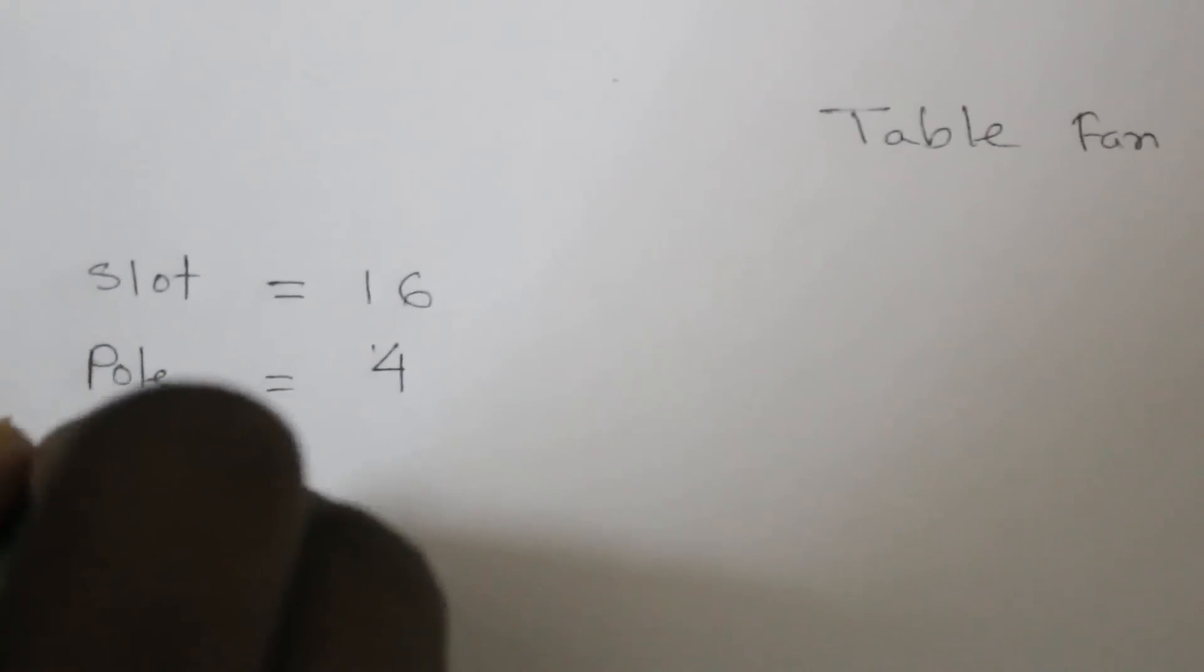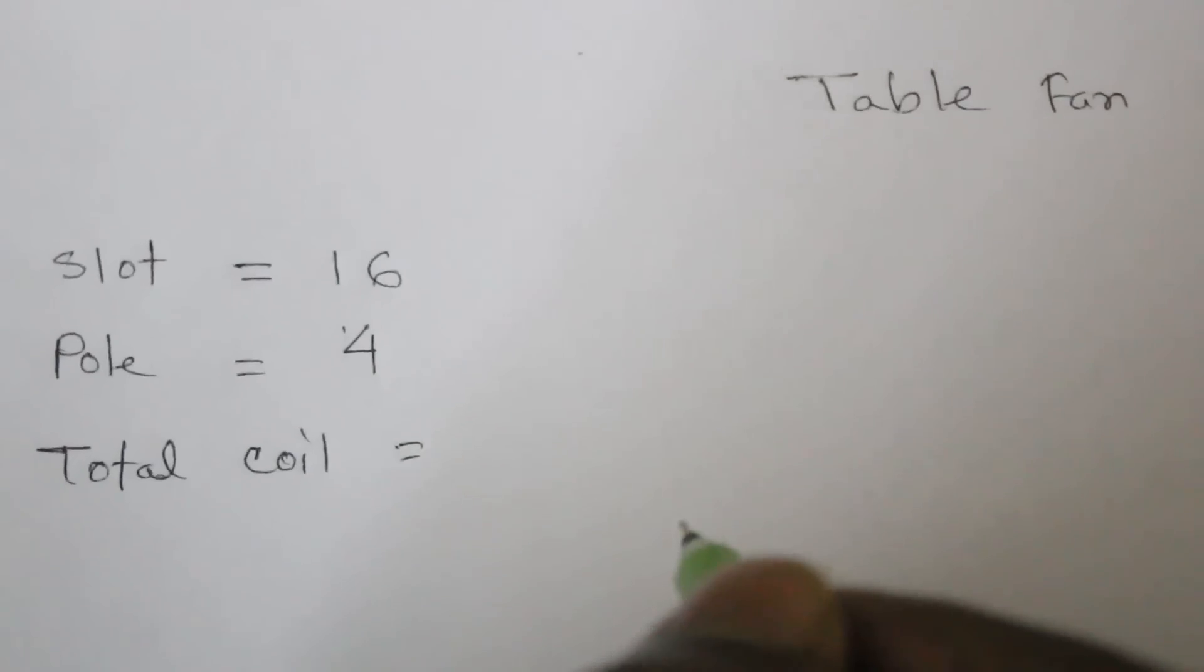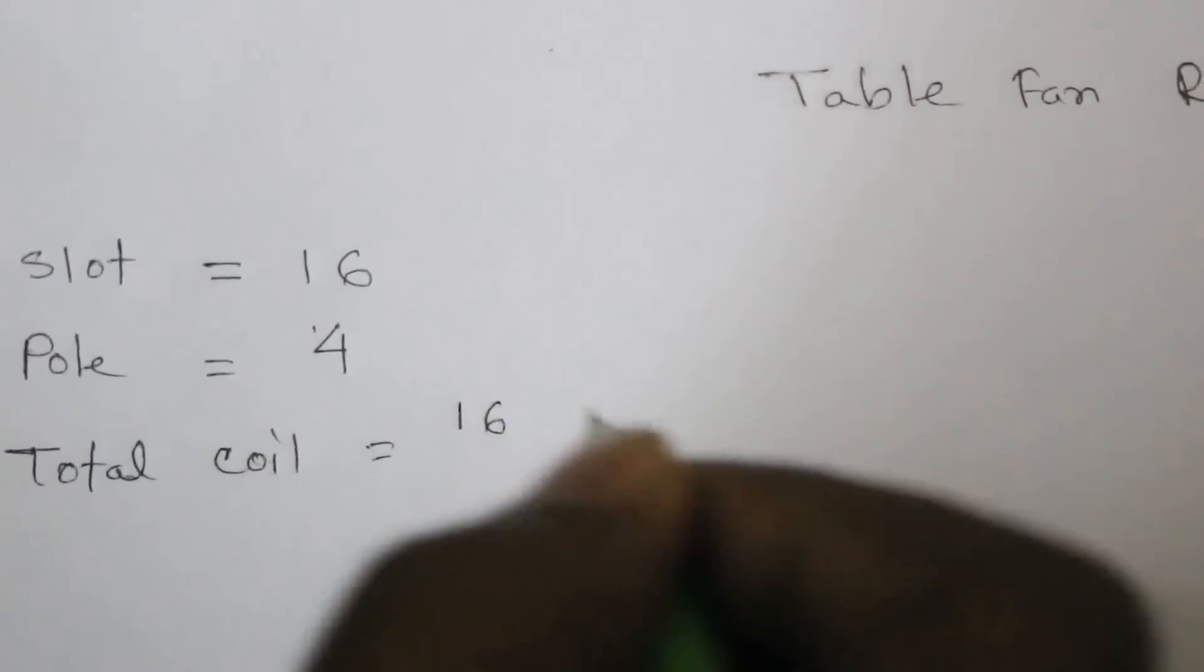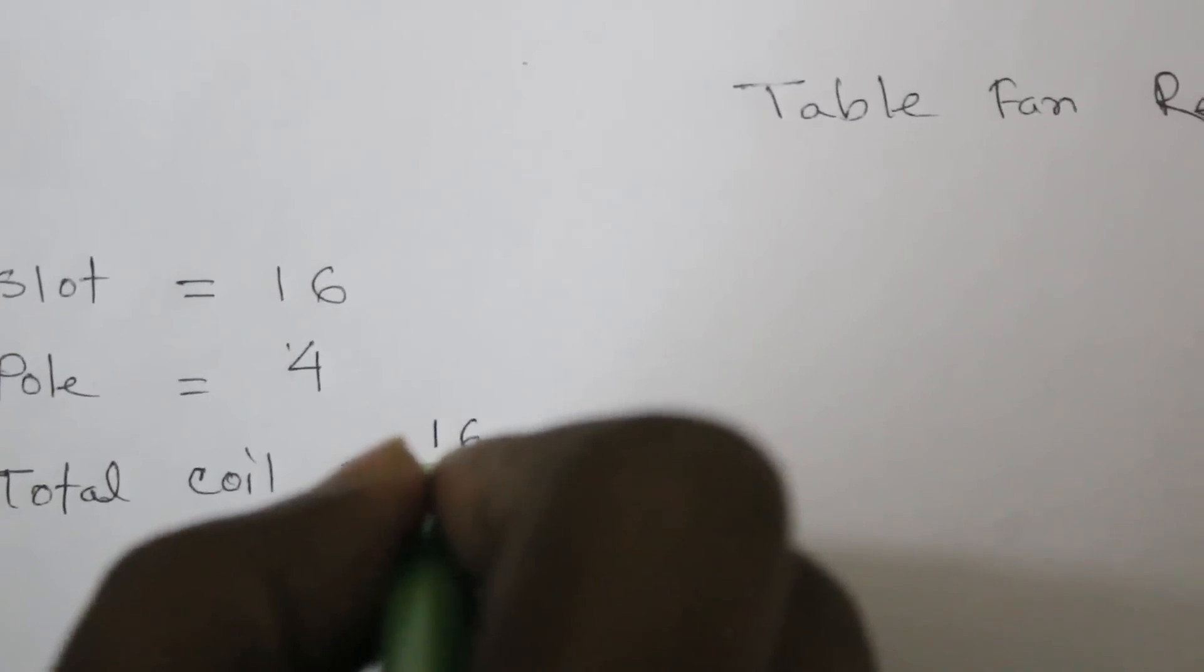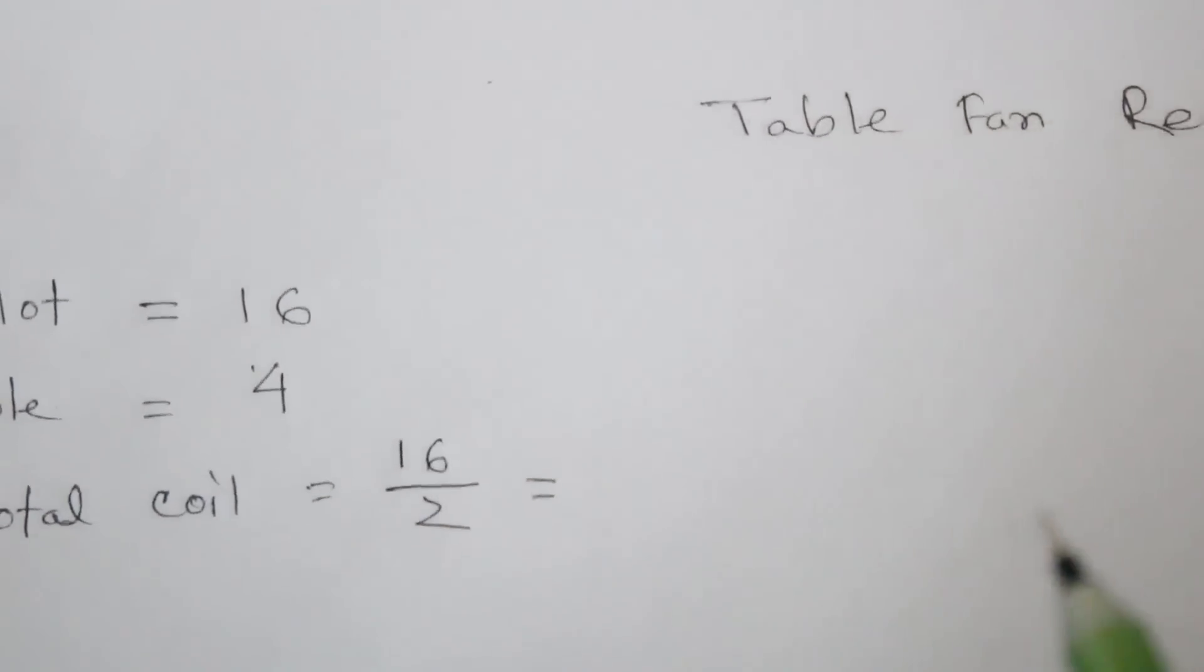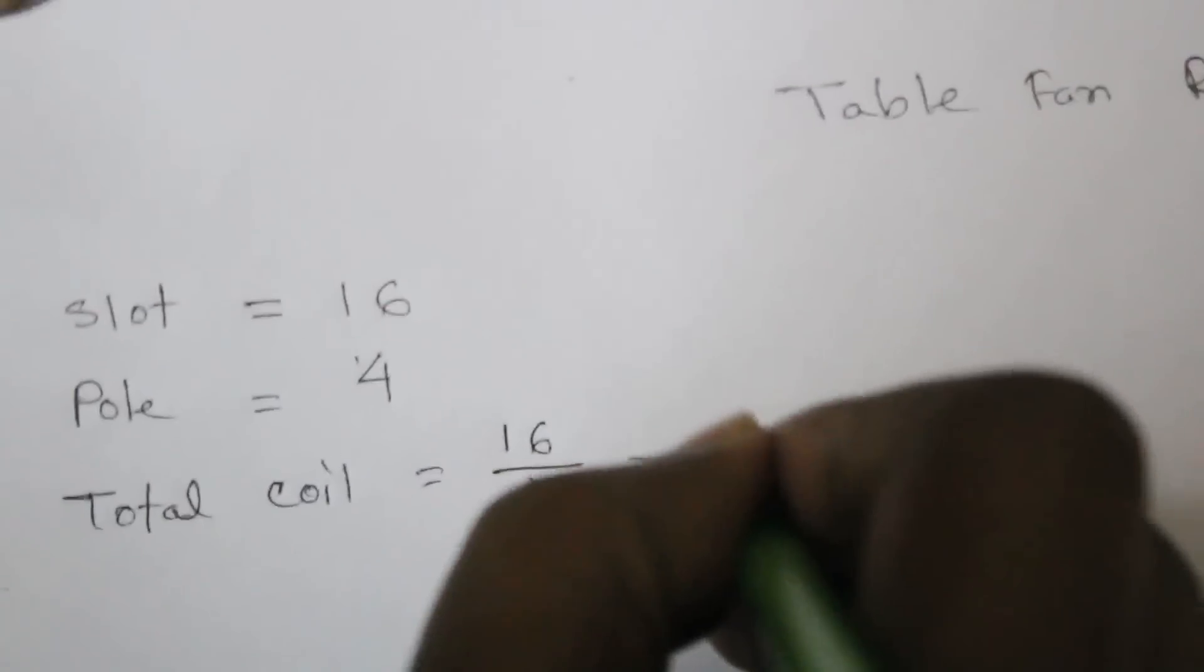Total coil is solat by 2, because it is a single layer rewinding. So 8.